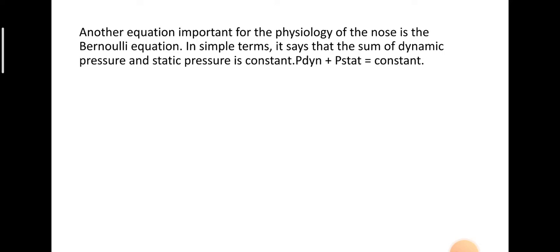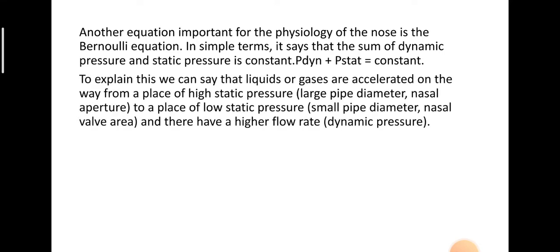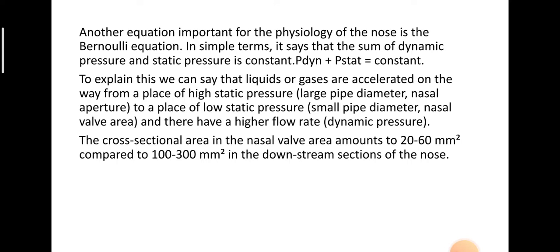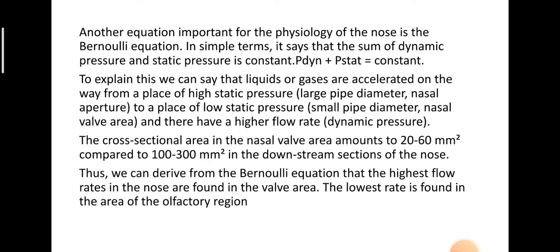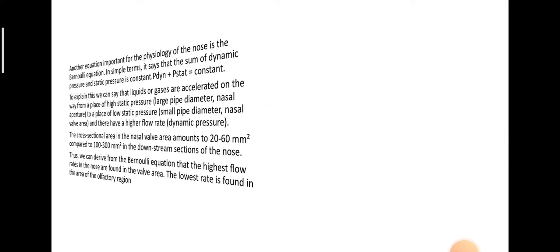Another equation important for the physiology of the nose is the Bernoulli equation, which states that the sum of dynamic pressure and static pressure is constant. Liquids or gases are accelerated from a place of high static pressure at the nasal aperture to a place of low static pressure at the nasal valve area, where they have a higher flow rate. The cross-sectional area in the nasal valve area is about 60 mm² compared to 300 mm² in the downstream sections of the nose. Thus, the highest flow rates in the nose are found in the valve area, while the lowest rate is found in the area of the olfactory region.